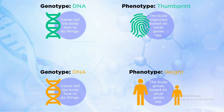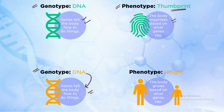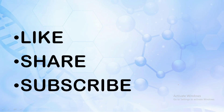A genotype is expressed when the information encoded by the gene's DNA is used to make protein and RNA molecules. In simple terms, genotype represents the genetic makeup — whether the organism is homozygous or heterozygous. Genotype is when the genes tell the body how to do things, and phenotype is the body organized based on what the gene says. Examples include thumbprint determined by the protein encoded by the gene, and height as an expression of what the gene instructs.